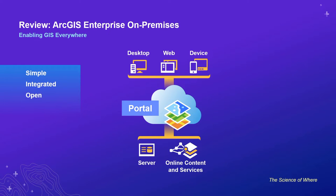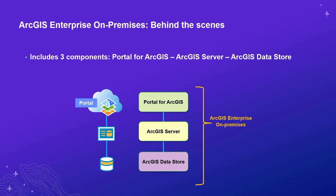Let's briefly review ArcGIS Enterprise on-premises. In the middle, we have the ArcGIS Enterprise instance comprised of ArcGIS Server, consuming some online content and services. Above that, we have common clients of ArcGIS Enterprise, including desktop clients, web clients, and various other devices. ArcGIS Enterprise is a simple, integrated, open solution available for disseminating GIS content to a large group. We'll focus on the three components that make up ArcGIS Enterprise on-premises: Portal for ArcGIS, the GIS server itself, and the ArcGIS Data Store.